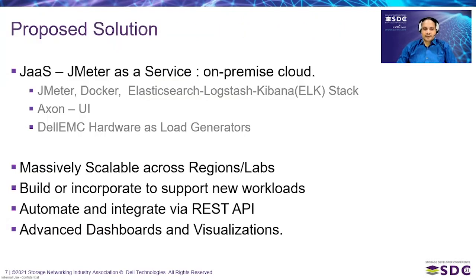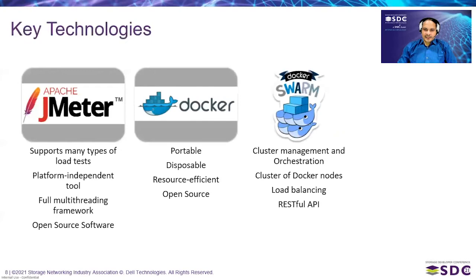We started building a solution using open source technologies to solve these challenges — called JAZZ, or geometry service. It's an on-premises private cloud solution built on JMeter, Docker, Elasticsearch, and runs completely on our own hardware as load generators. The solution is massively scalable across regions and labs, supports building new workloads via JMeter scripts, has a REST API interface, and supports advanced dashboards and visualizations.